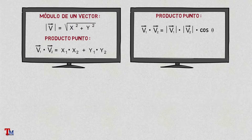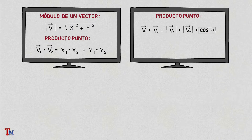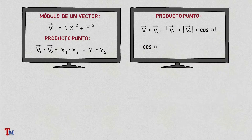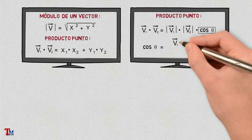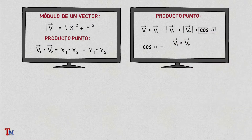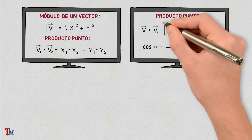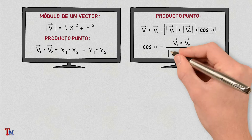Now, in this formula, if we want to calculate the cosine of the angle between two vectors, we rearrange it and we get that this will be equal to the dot product of the vectors divided by the multiplication of the modules of both vectors.